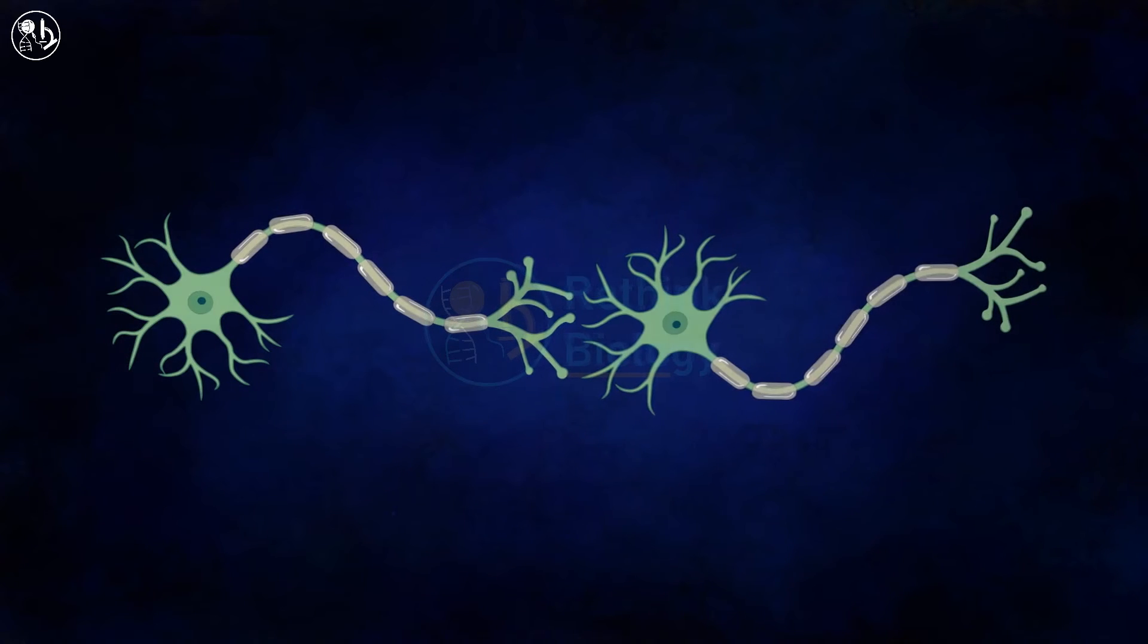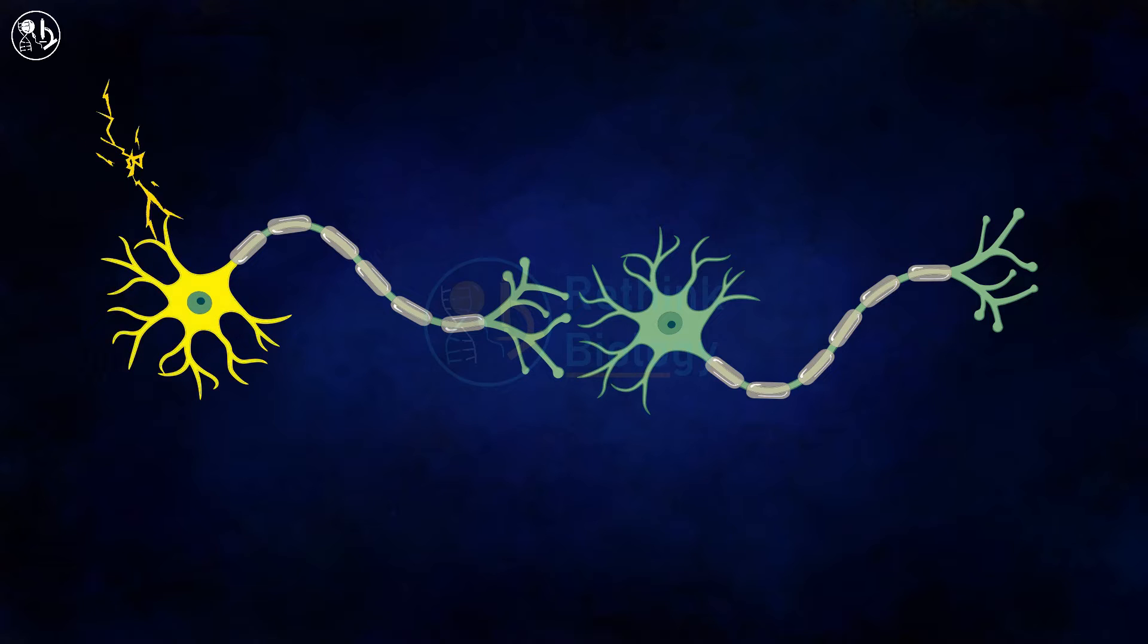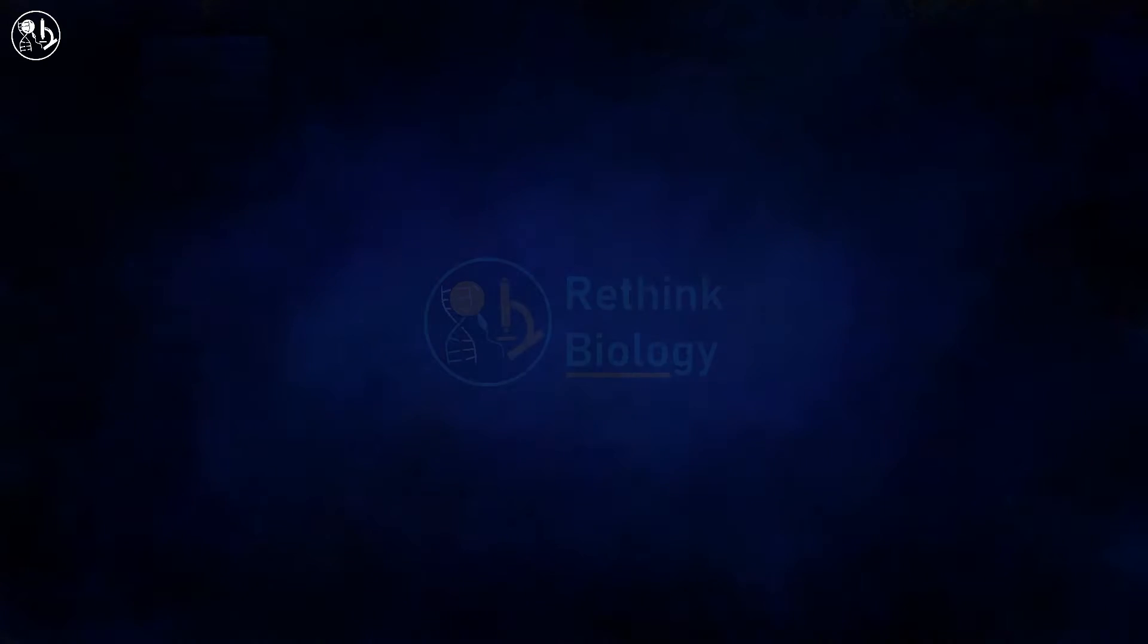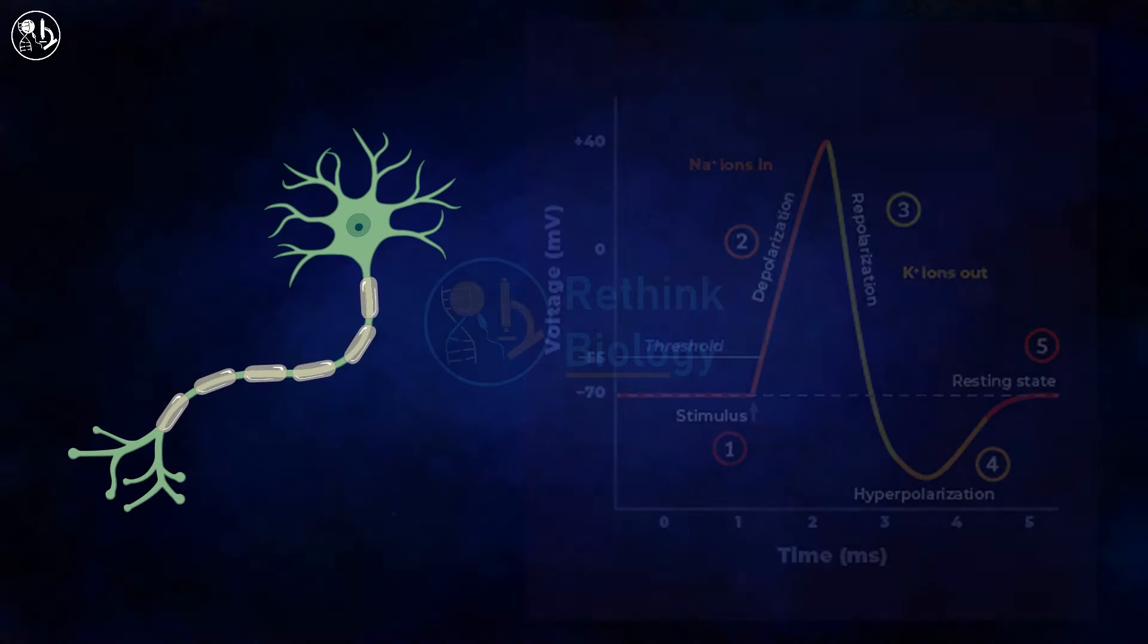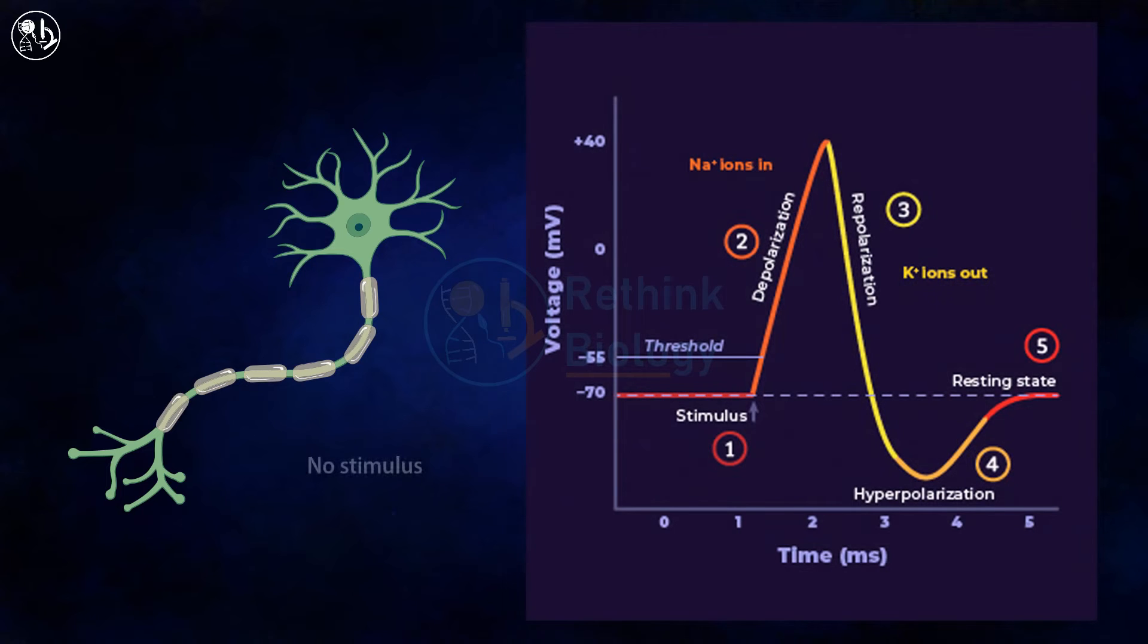These neuron cells are excitable cells which generate and transmit signals by action potential either in the presence or absence of stimulus. When a neuron is not being stimulated, it maintains a resting membrane potential which is about minus 70 millivolt.